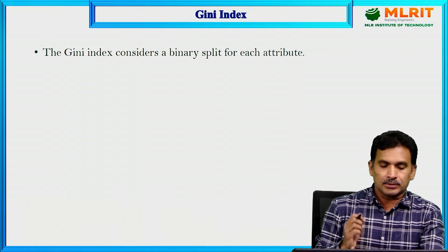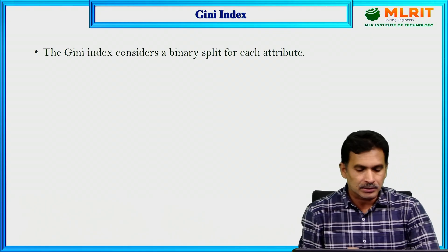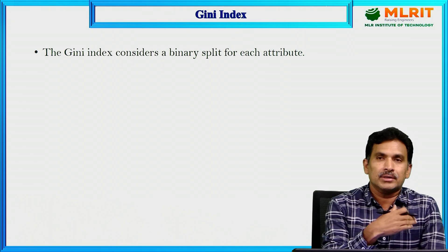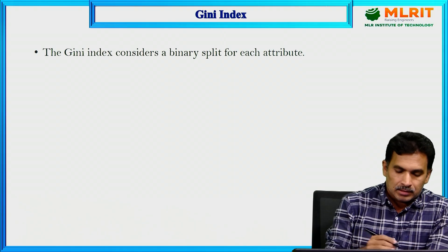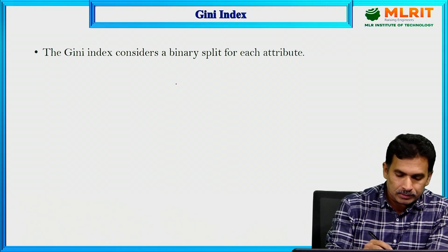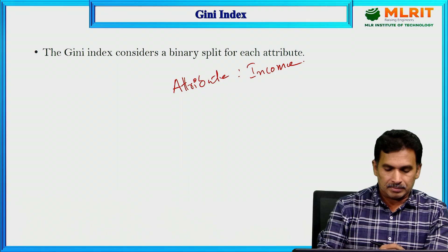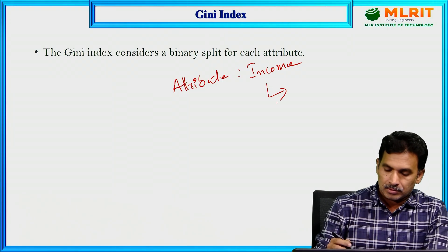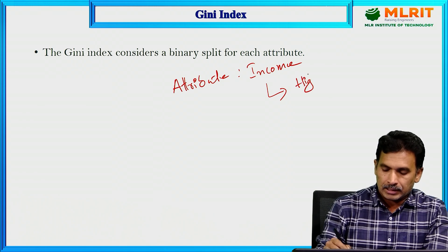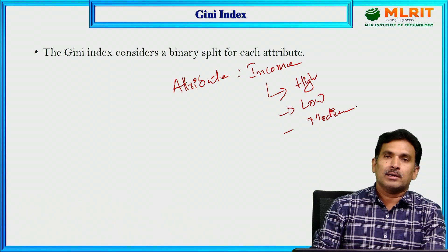The Gini index considers the binary split for each attribute, which is completely different from both information gain and gain ratio. For example, take the attribute income, which has three unique values: high, low, and medium. The Gini index will select a binary split — for instance, grouping 'high' into one partition and the remaining values into another.